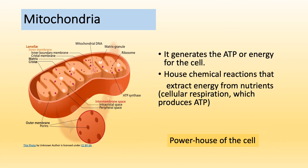Mitochondria are another organelle with a double-layered membrane — inner and outer. They generate ATP, or energy, for the cell by housing the chemical reactions that extract energy from nutrients through cellular respiration. They are the powerhouse of the cell. Mitochondria can number anywhere from hundreds to thousands depending on the cell. Active cells in the muscles, liver, and kidneys have a large number of mitochondria to support high metabolic demand.